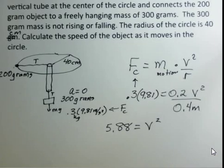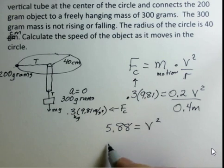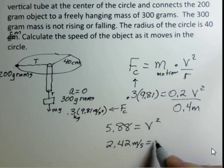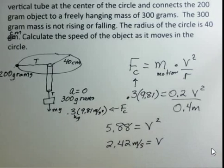We want to know the value for V. So you take the square root of both sides, and 2.42 meters per second is the velocity number, the speed number. 2.42 meters per second.